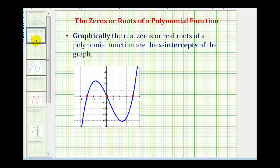And then lastly, graphically, if we have real zeros, the real zeros would be the x-intercepts of the graph of the function.